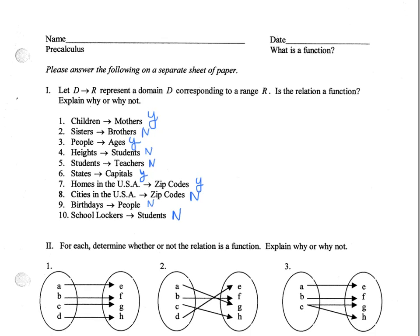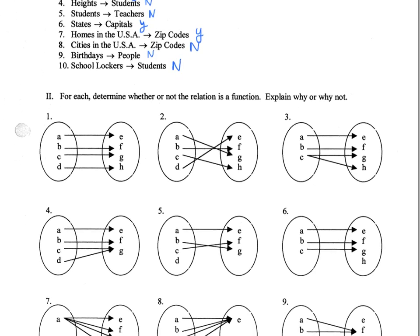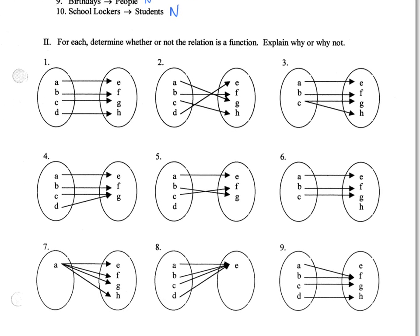And now we're ready for part two, where we've got a different representation of relations. We're going to determine if these are functions or non-functions. Now the first one, I see that every element in the domain corresponds to an element in the range. So this is a yes. This is also a yes, even though it's not as orderly as number one. Number three, because C corresponds to more than one element in the range, is a no.